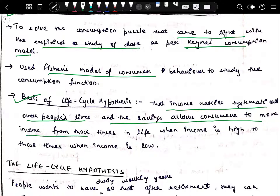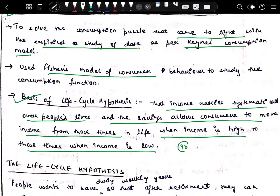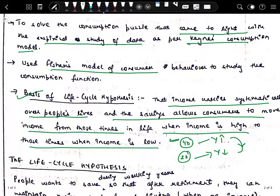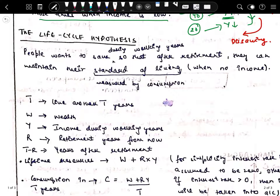Savings allow consumers to move income from those times in life when income is high to those times when income is low. Suppose we work for 40 years; during this time our income is going to increase. Whereas for the remaining period, say after retirement, we live for another 20 years — during this time our income is going to reduce, and we need to consume from the amount saved while working. This saving is used when we retire — this is called dissaving. This is the basis of the Life Cycle Hypothesis.